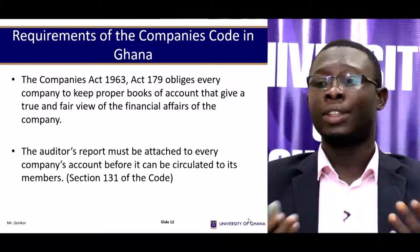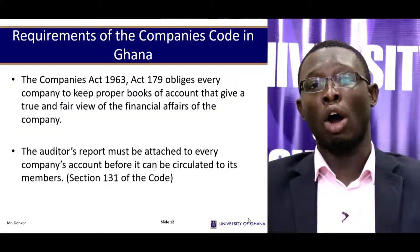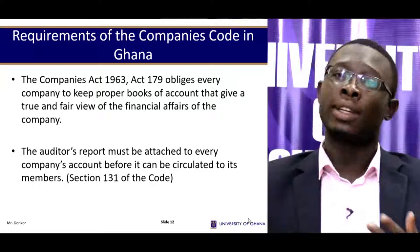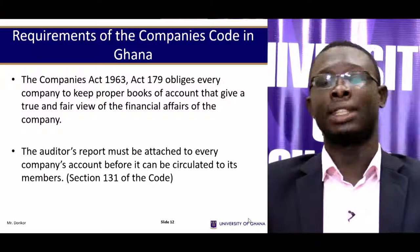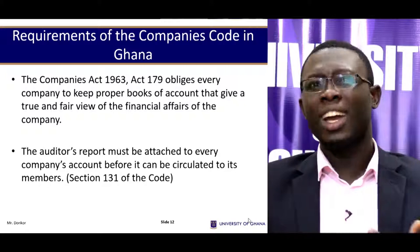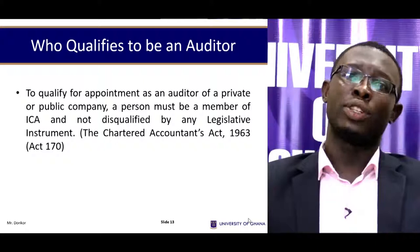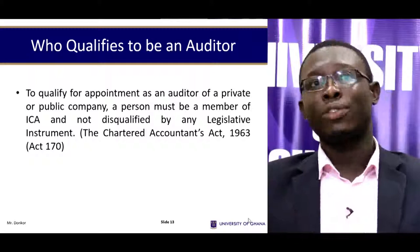Requirements of the Companies Code in Ghana. The Companies Code, Act 179 of 1963, obliges every company to keep proper books of account. To maintain those proper books of account, auditors must audit them. The auditor's report must be attached to every company's accounts before they can be circulated to members. Based on this code, it is important to know who qualifies as an auditor in Ghana.